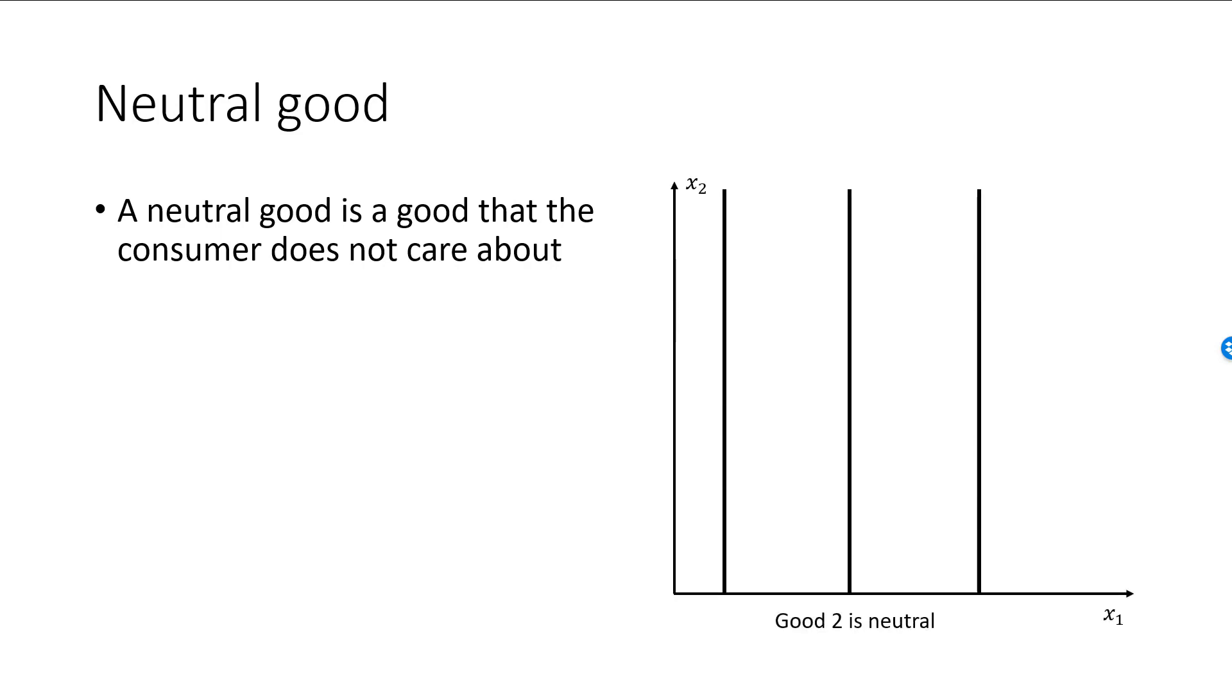Here is a graph of indifference curves when good 2 is neutral. In this graph good 1 is a good that we appreciate. For a given bundle, all I care about is the quantity of good 1. Therefore, I will be indifferent between two bundles if they have the same quantity of good 1, no matter how much of good 2 each bundle has, and indifference curves will be vertical lines.